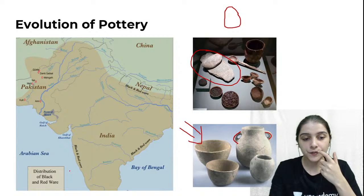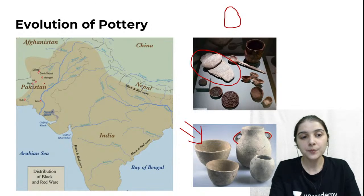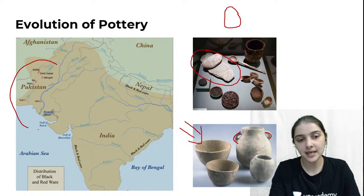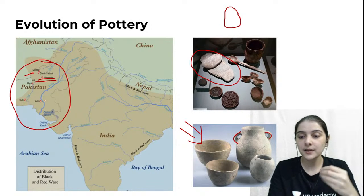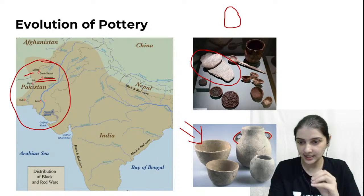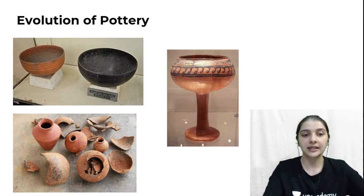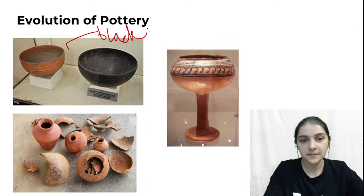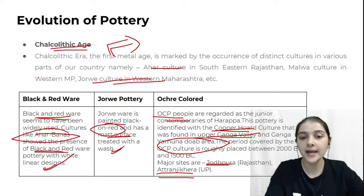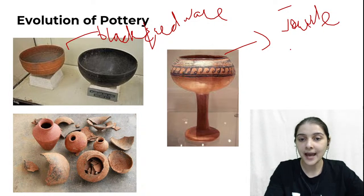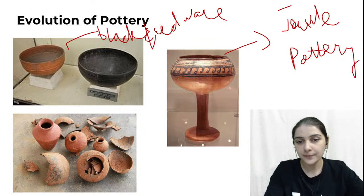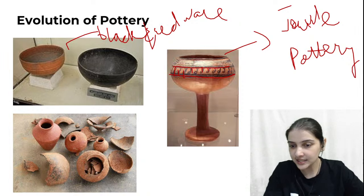Coming to the areas of distribution of black and red ware — this black and red ware was found in these areas: the North Western Frontier Province, Quetta, Mehrgarh, and surrounding areas. In all these prominent areas, black or red ware was found. Looking at the image — black and red ware — the pottery is made fully in black color or fully in red color. Second came Jorwe pottery — that is black on red. The entire base is red, and then designs are painted in black. Red ke upar kaala — black on red is Jorwe culture.